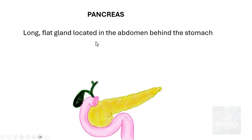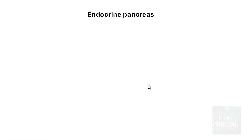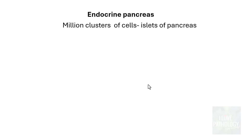As we all know, the pancreas is a long flat gland located in the abdomen behind the stomach, which extends horizontally from the duodenum towards the spleen. It has both endocrine and exocrine functions. The endocrine pancreas is basically composed of millions of clusters of cells, and these clusters are referred to as islets of pancreas.